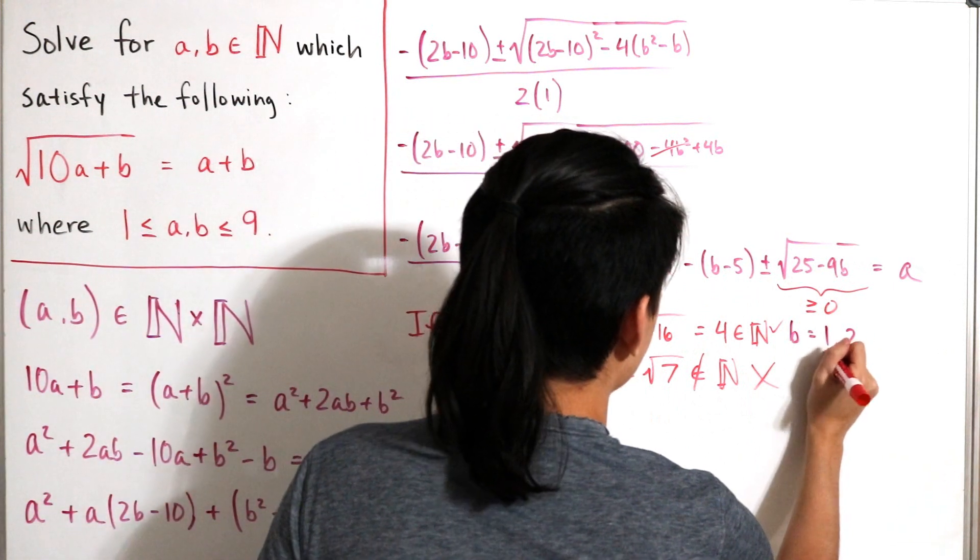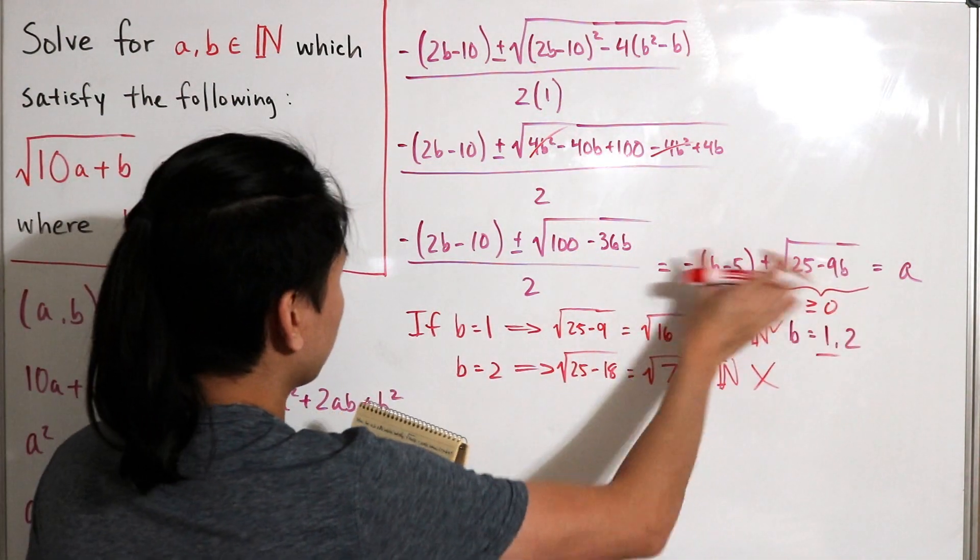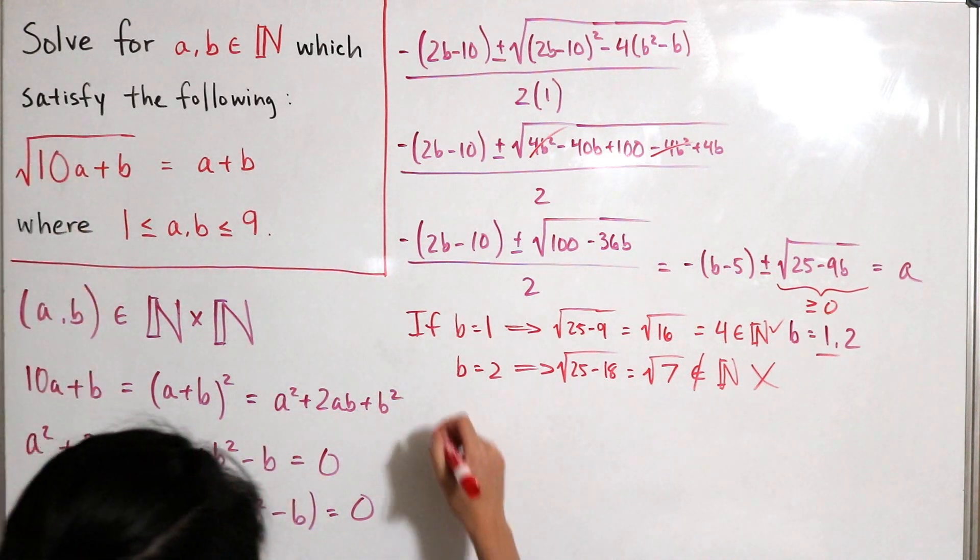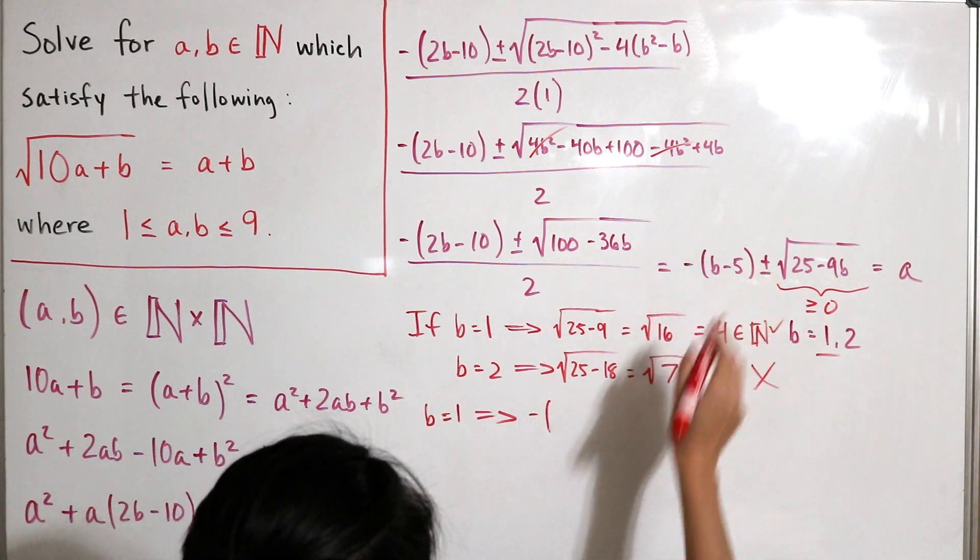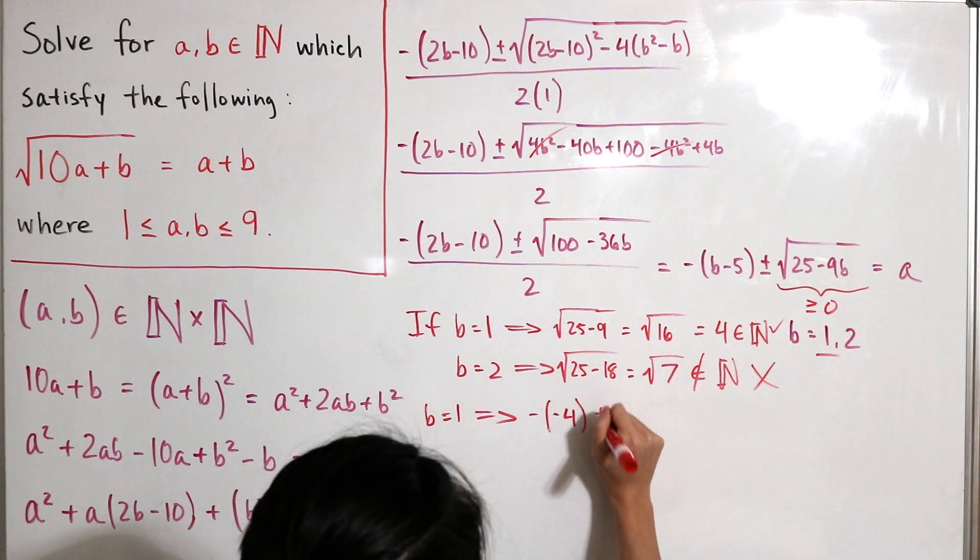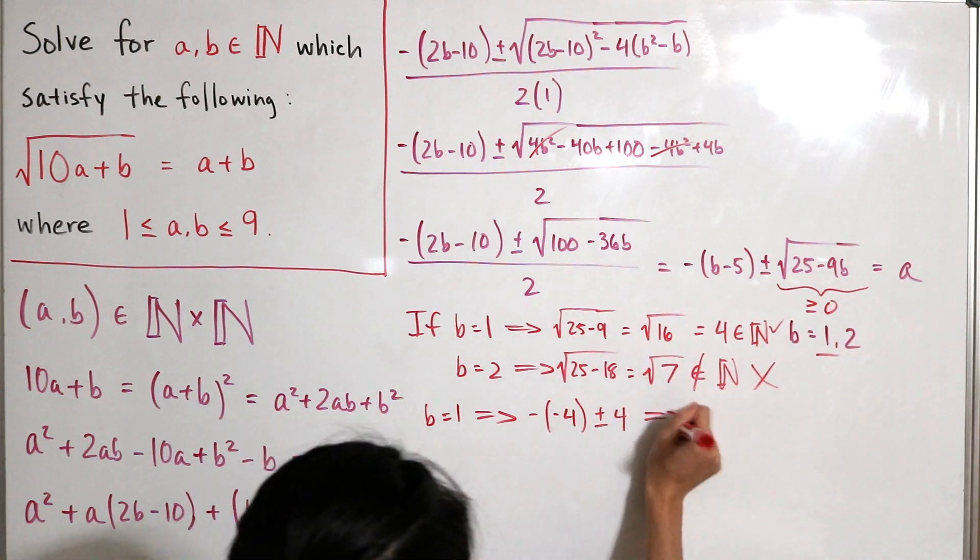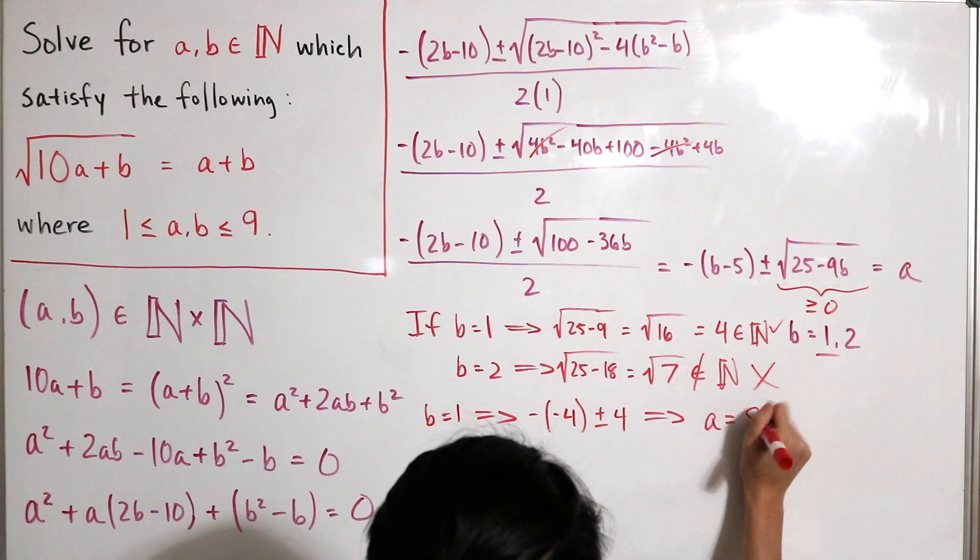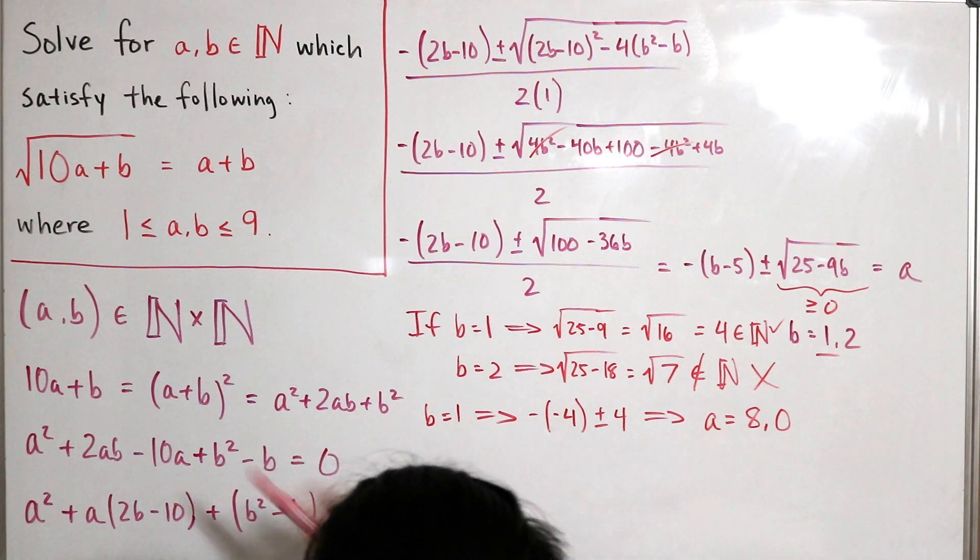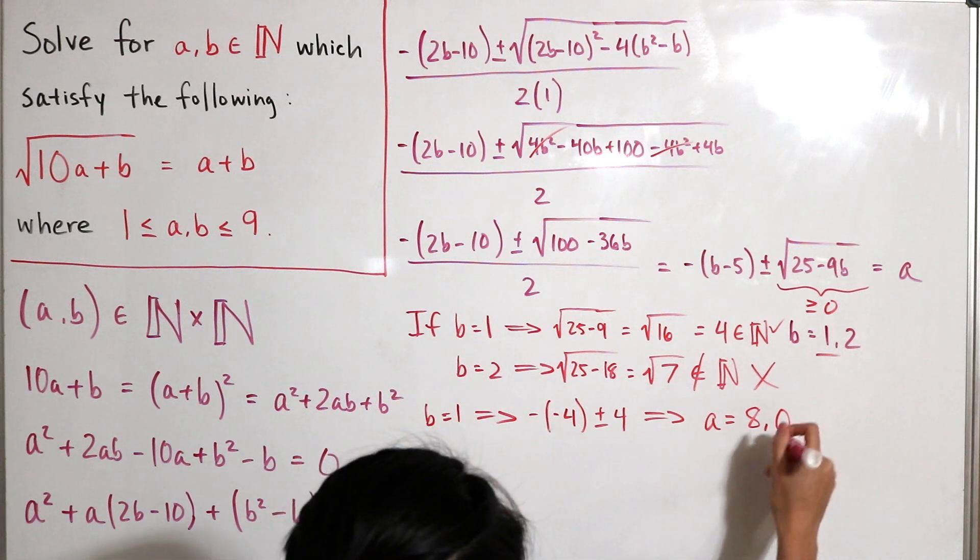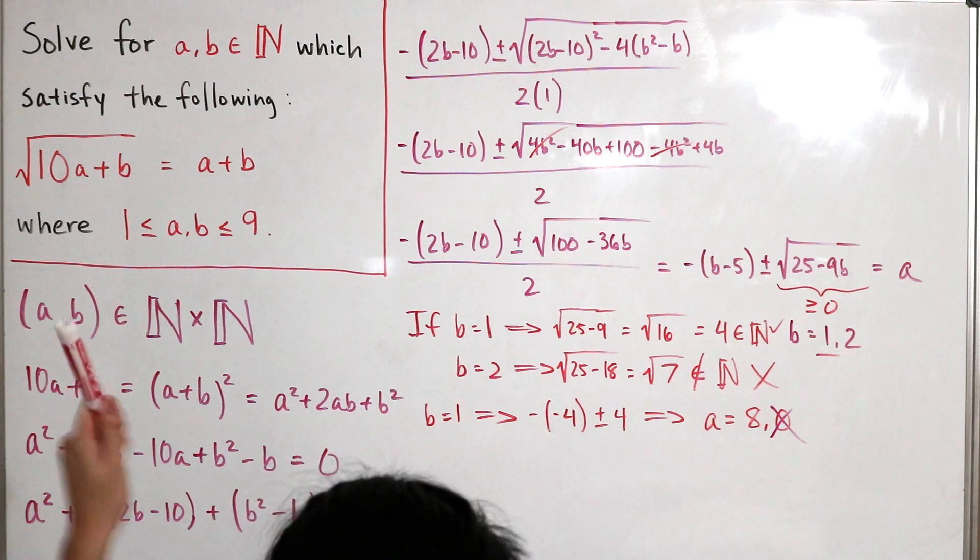So therefore, the only solution for b is that b can only equal 1. With that, now we can actually just plug 1 back into our quadratic formula expansion. So now b equals 1, so this is minus 1 minus 5, that would be just negative 4, then plus or minus 4. So therefore, we have two solutions of a: a is equal to 8 and 0. Now, we can actually just exclude a equals 0 because that's not part of our set, so that can just go away. And so we have that solution as a is equal to 8.